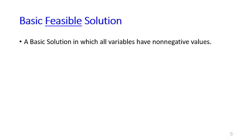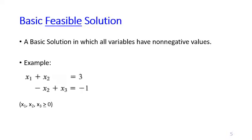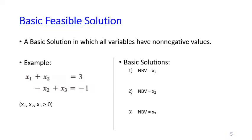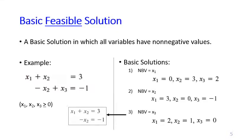From the basic solutions we can further define basic feasible solutions. A basic solution is called a basic feasible solution if all variables have non-negative values. For example, with three variables and two constraints, if we set x3 as non-basic we solve for x1 and x2 and obtain x1 = 2, x2 = 1, x3 = 0.